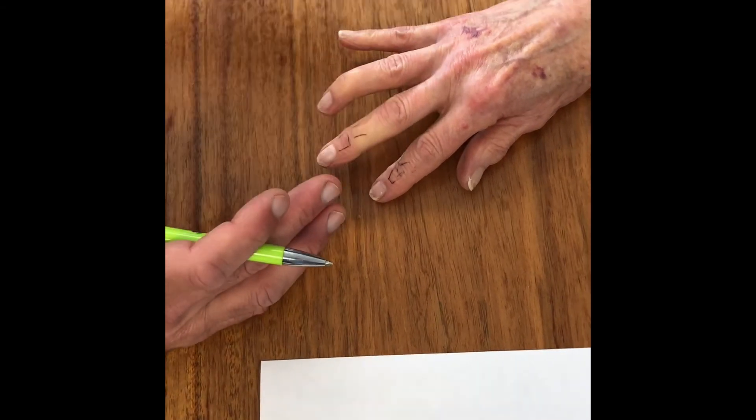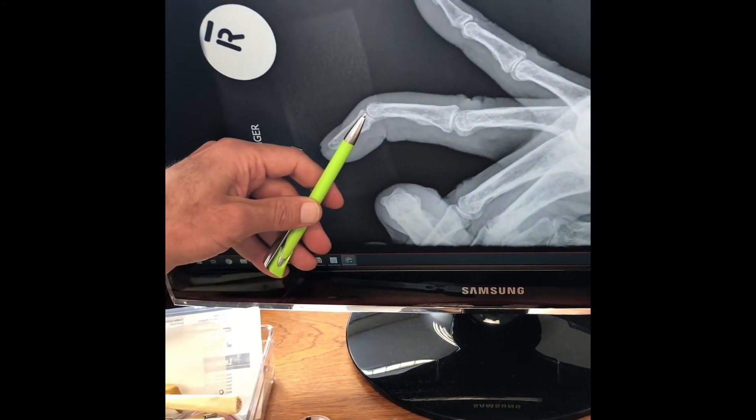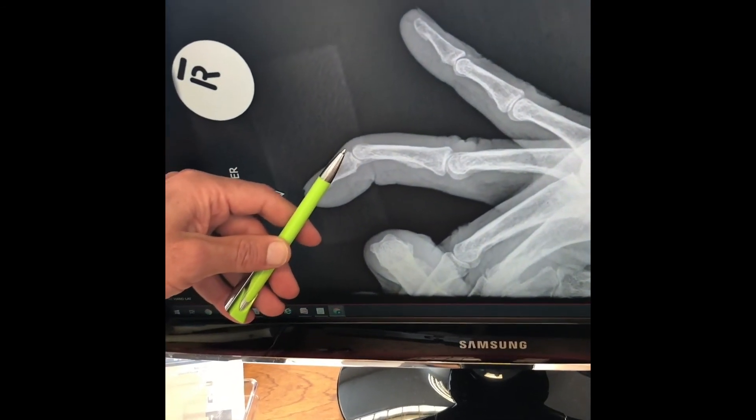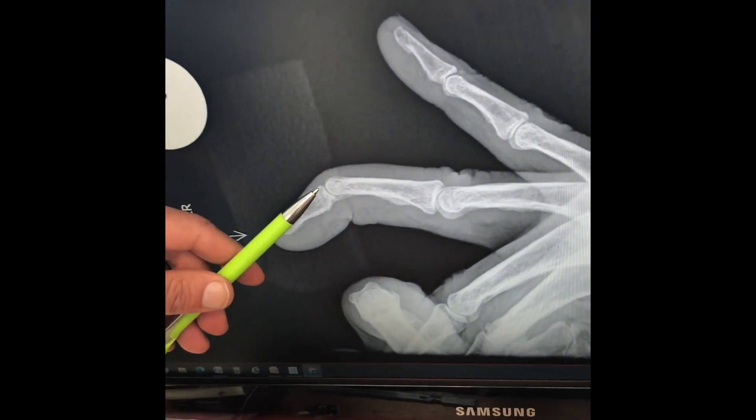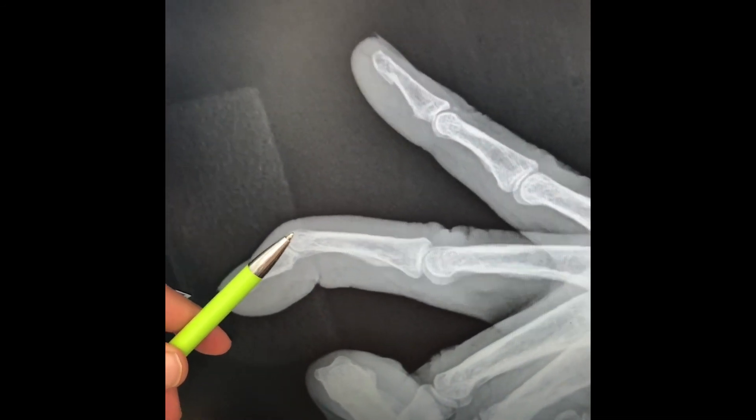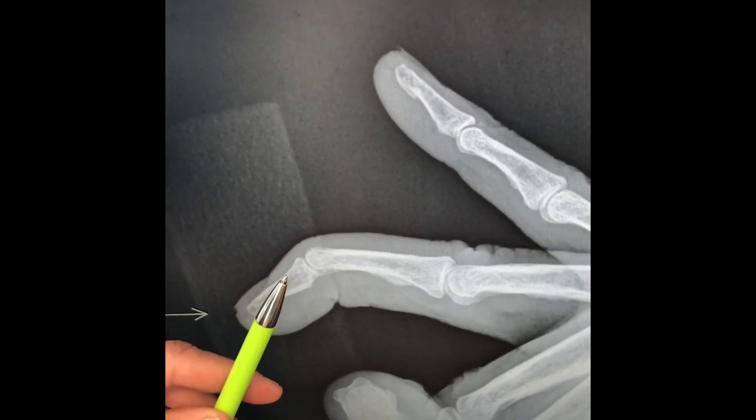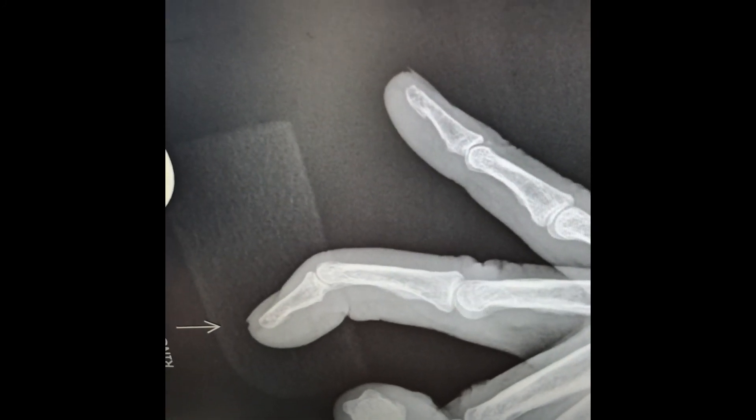Most of the time, we should consider taking an X-ray just to exclude a fracture. Sometimes a small piece of bone pulls off with the extensor tendon, and that might have to be managed differently. But as you can see, there's no bone injury here. This is a soft tissue problem. The extensor tendon is probably sitting there, and the bone is dropped into a flexed position and deformity.